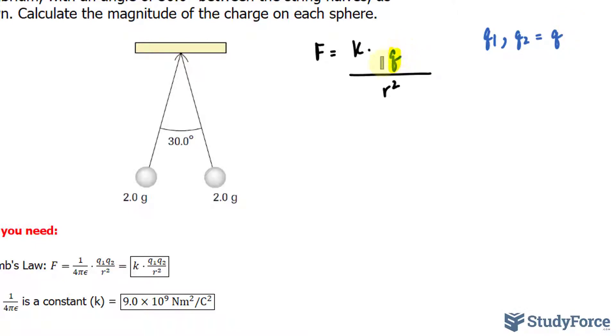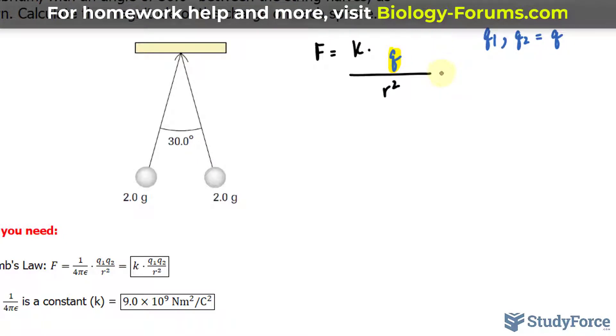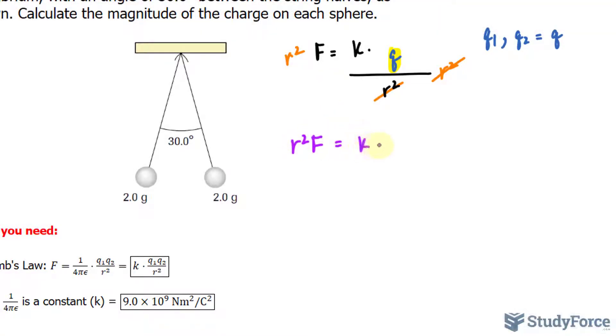I'll solve for q first, then we can start the physics portion of this question. Using some basic algebra, I'll multiply both sides by r². Then we have r² times F equals kq. We divide both sides by k, and this isolates for q. So q equals r²F/k. Now it's important that once you find q, whatever that value is, it gets square rooted, because q represents two identical charges q₁ and q₂.